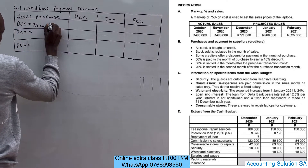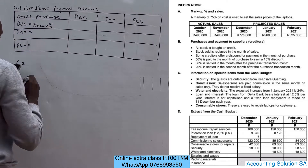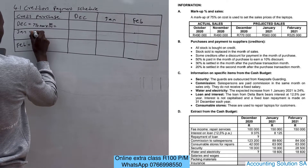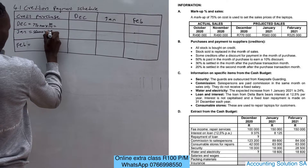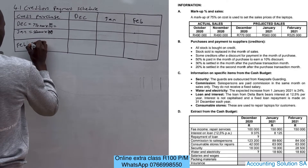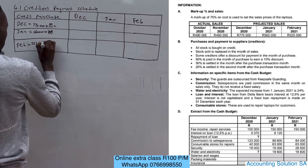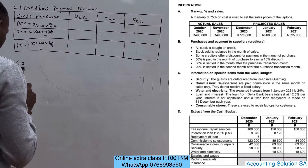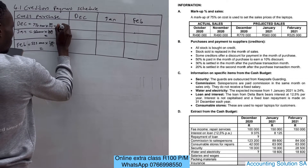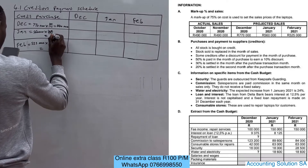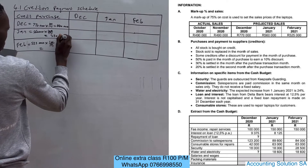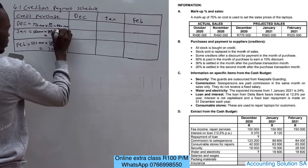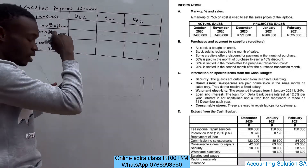For December we're going to have 770,000 multiplied by 100 over 175, because we are looking for cost of sales and our markup is 75 percent. For January we're going to have 560,000 multiplied by 100 over 175, and for February it's 525,000 multiplied by 100 over 175. The answers are: December = 440,000; January = 320,000; and February = 300,000. Make sure you show this calculation so that you can earn marks.